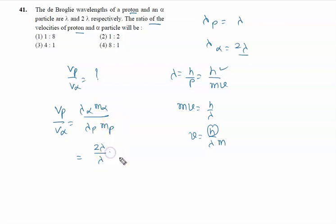For the masses, if the mass of the proton is m, the mass of the alpha particle is four times the mass of the proton.